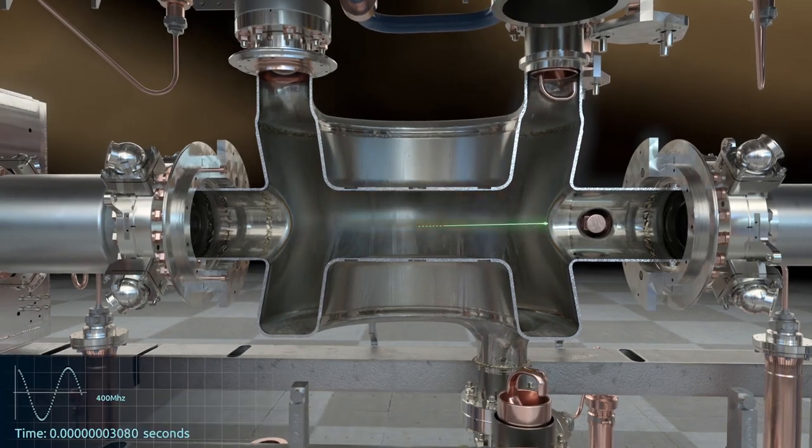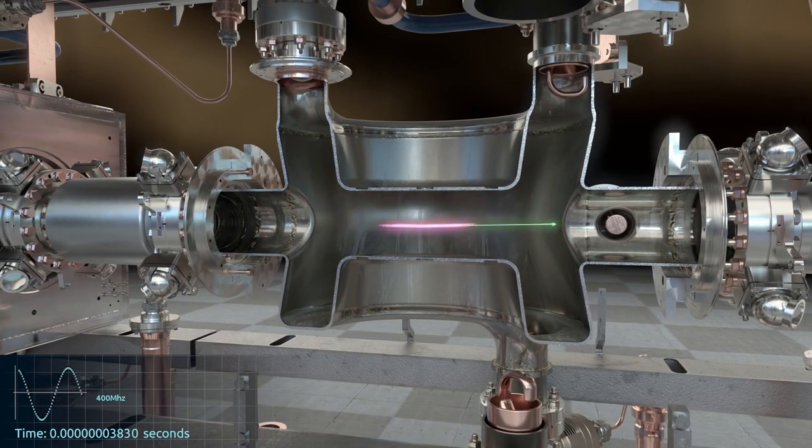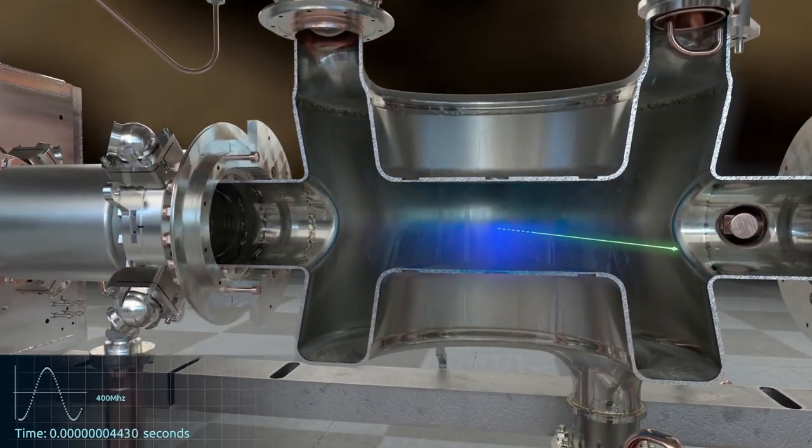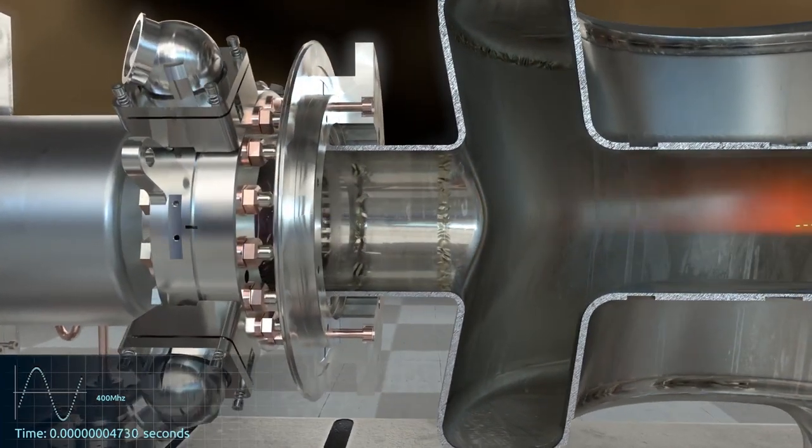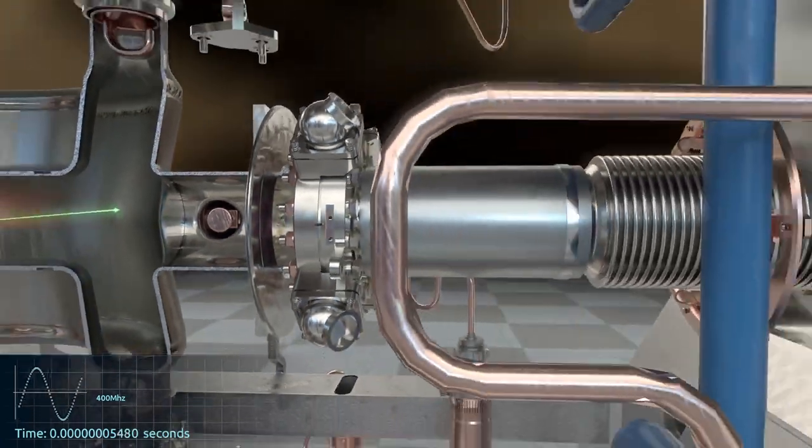This is a diagram of the crab cavity. As the proton bunches go inside this structure they get rotated vertically or horizontally and then come out the other side. This means that at the interaction points we have more overlap which gives us more data and we can do better science.